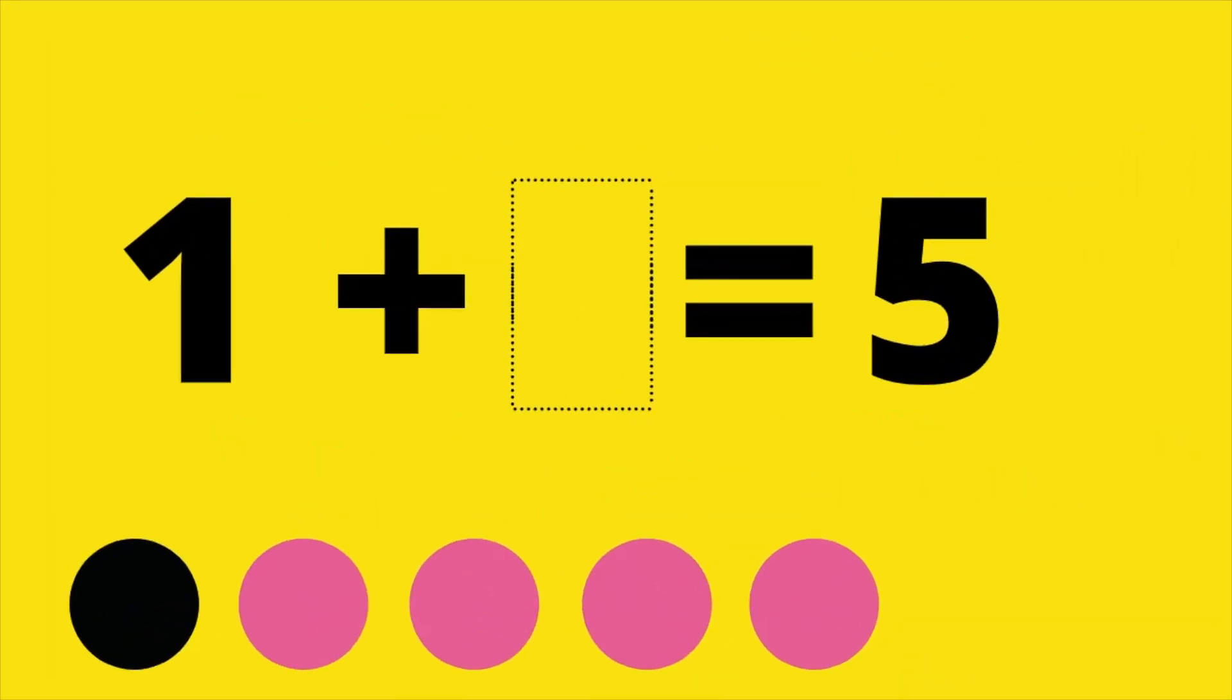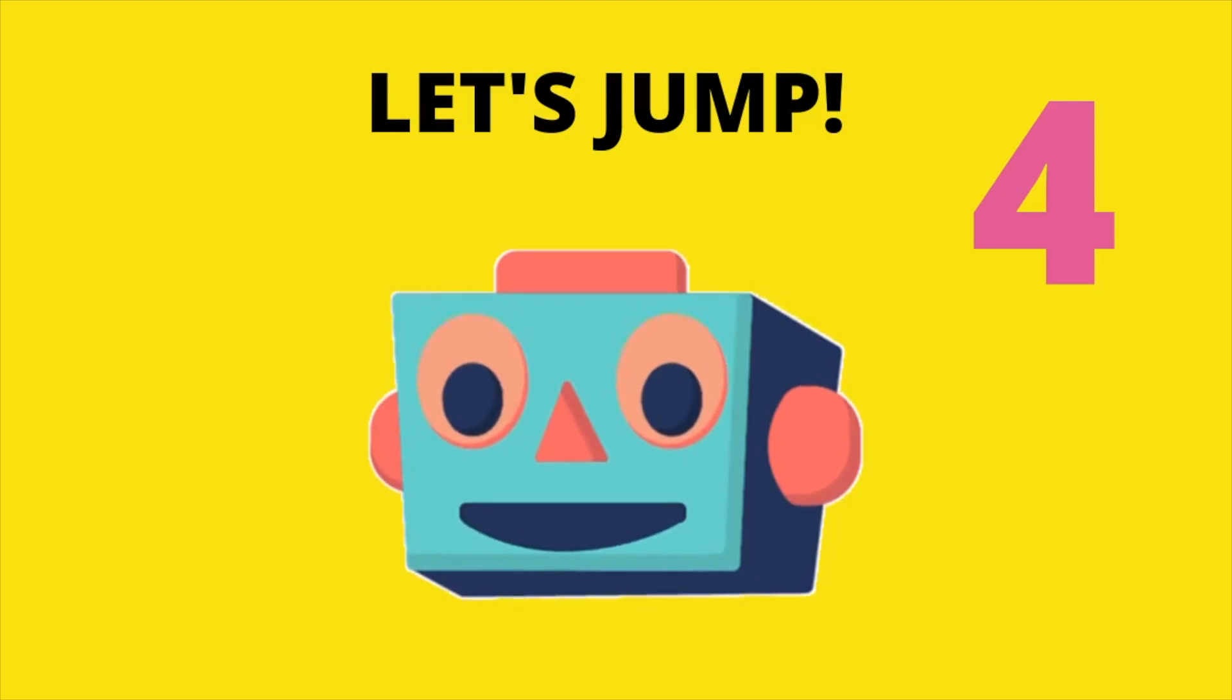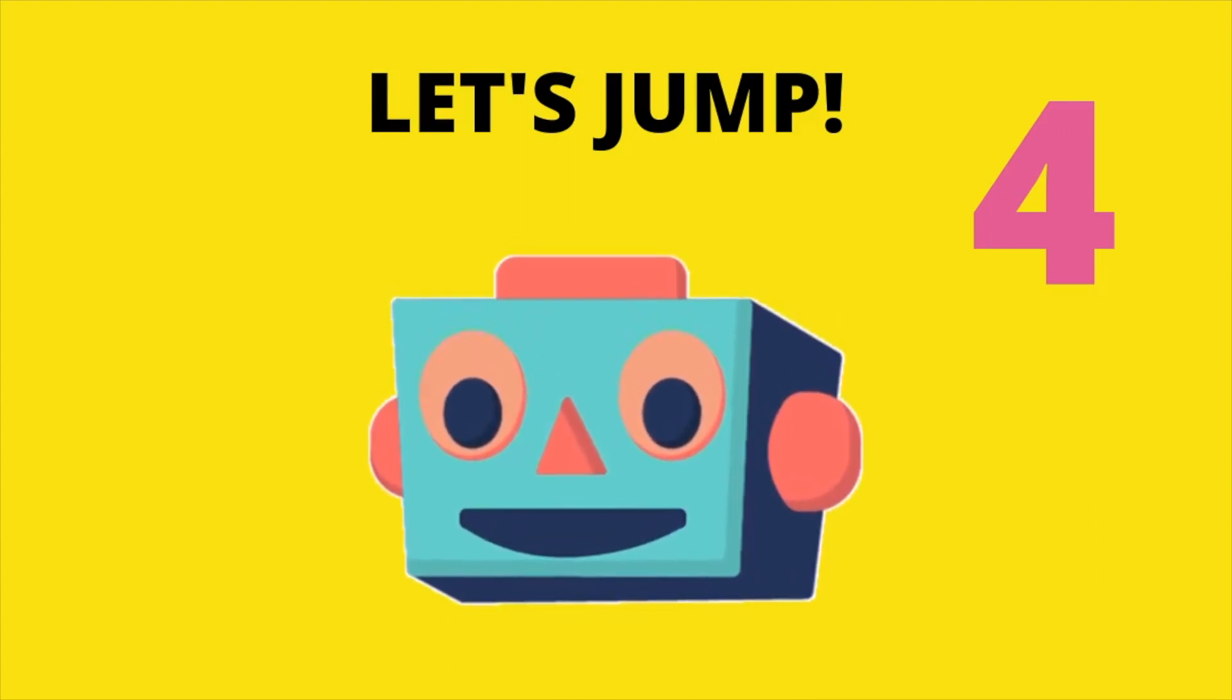All right, let's get into our first problem. One plus blank equals five. Notice there are dots at the bottom of the screen to help you get the correct answer. Simply count the pink dots to get the correct answer. And the answer here is four. One plus four equals five. All right, now it's time for the move. Let's go. Four jumping jacks. One, two, three, four. Great job.